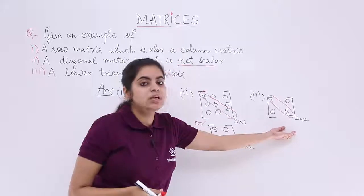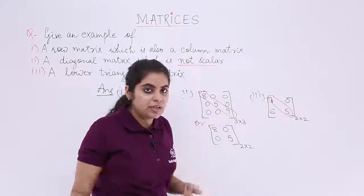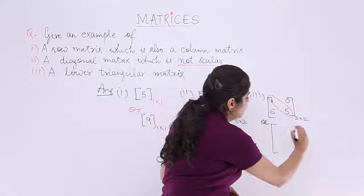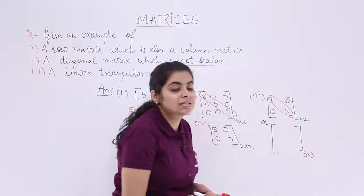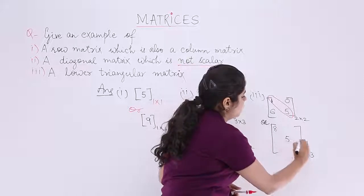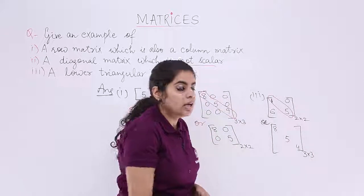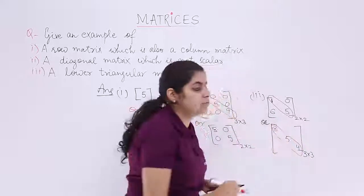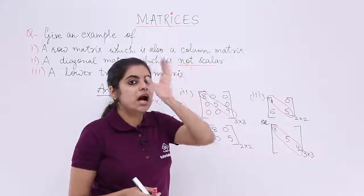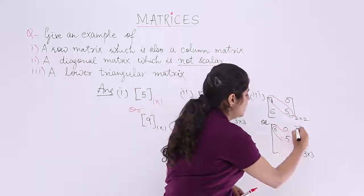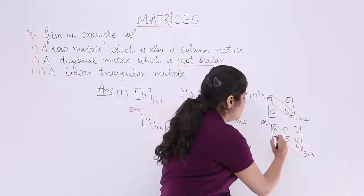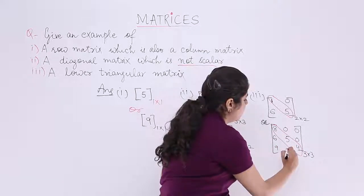If you prefer a 3×3 example: a 3×3 matrix has 3 rows and 3 columns. Let the diagonal elements be 8, 5, and 4. For a lower triangular matrix, all elements above the diagonal should be 0, and the rest can be non-zero — say 6, 9, and 11. This completes the 3×3 lower triangular matrix example.